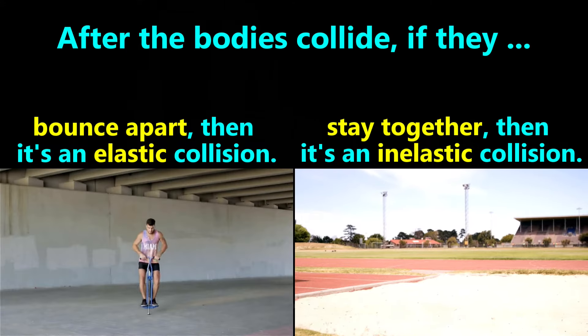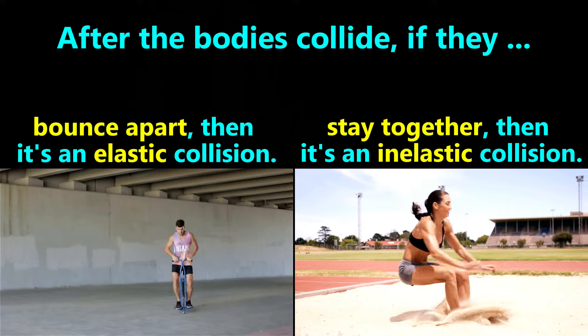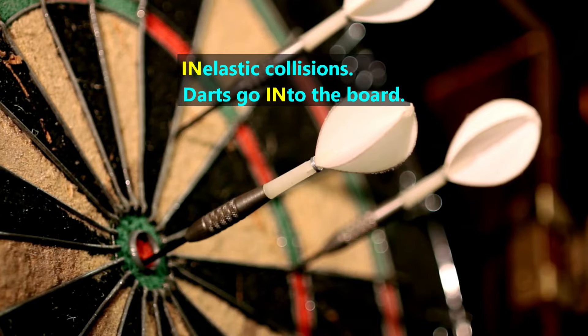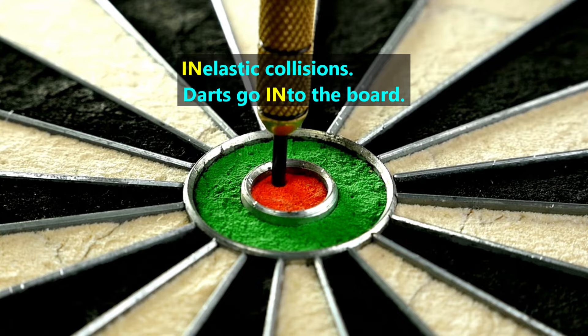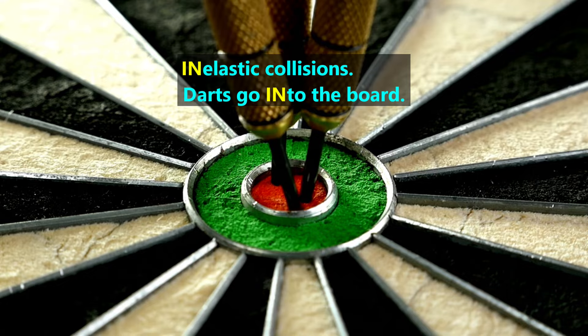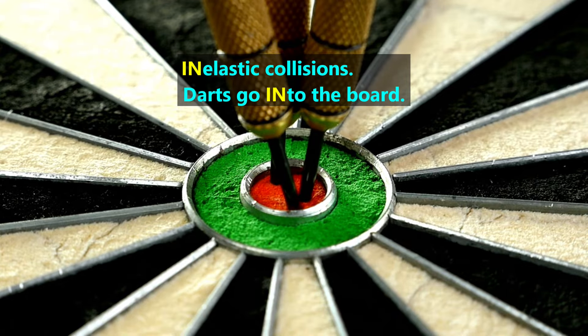Please note that in many collisions, one of the bodies is the earth, such as when one body is falling to the ground. One way to remember which type of collision means which type of action is to think of darts going into a dartboard. The word into and the word inelastic both start with the prefix in.